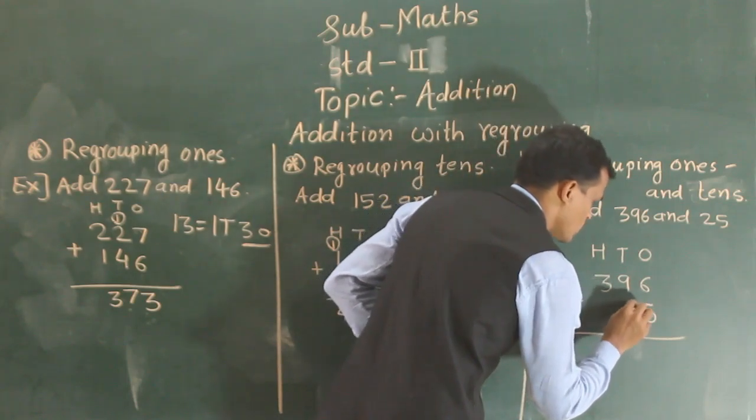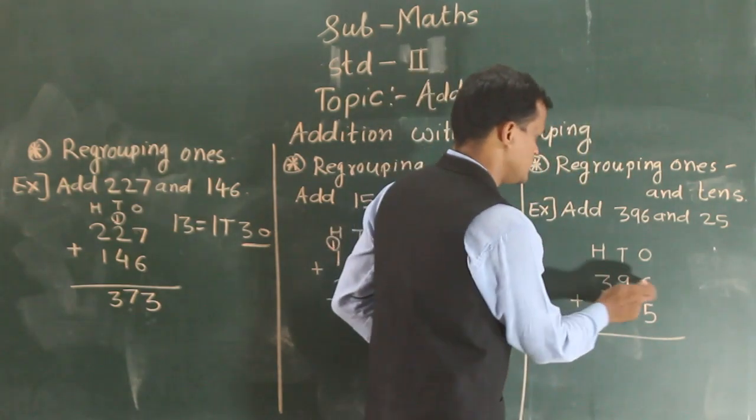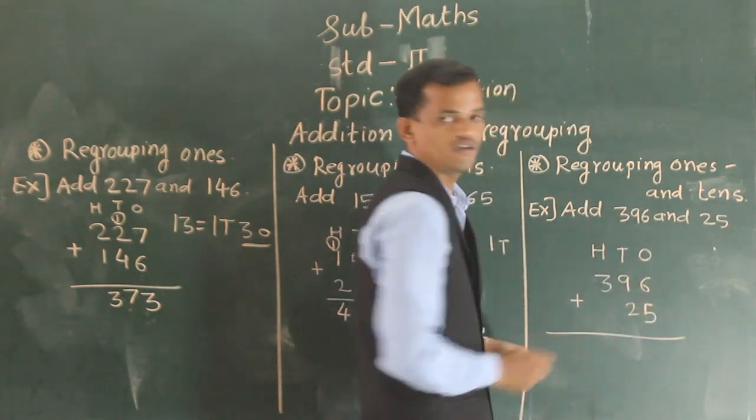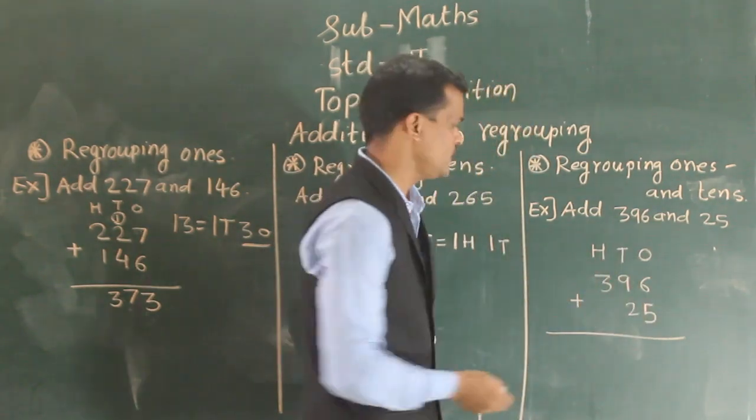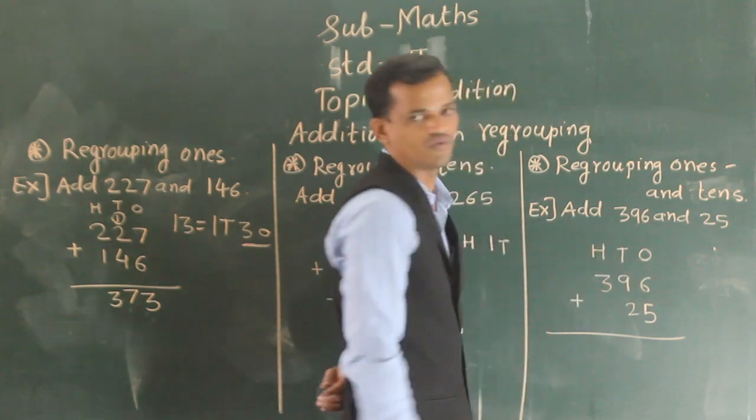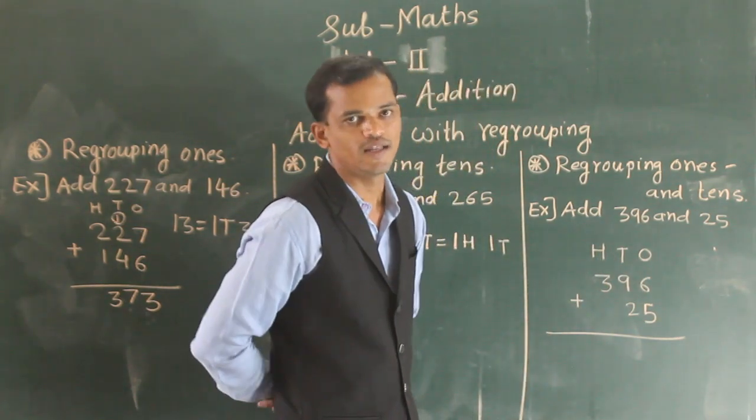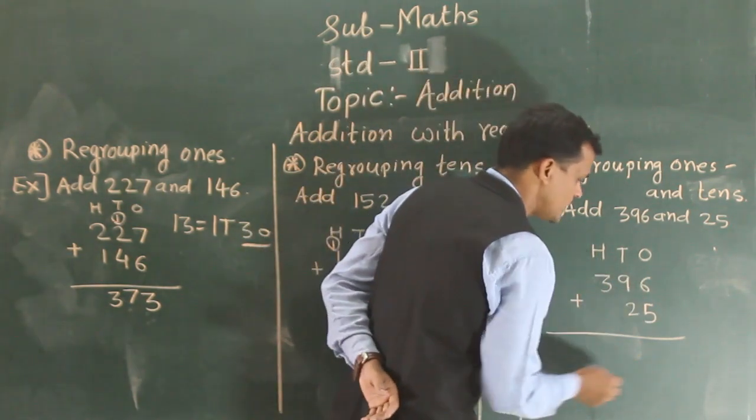So 6 plus 5. So 6 plus 5, 11. 6 plus 5, 11.